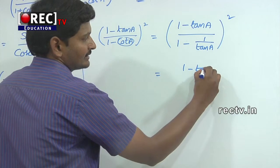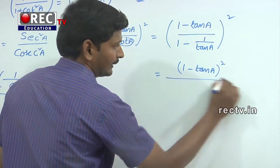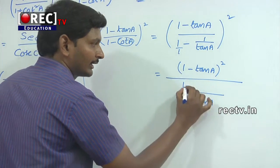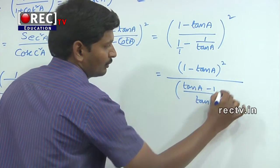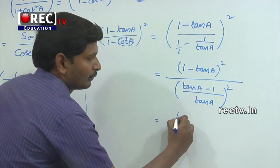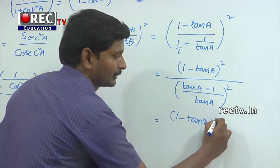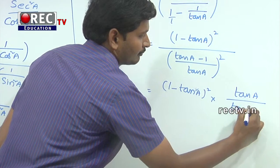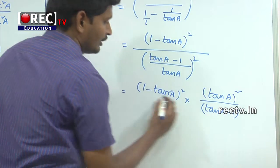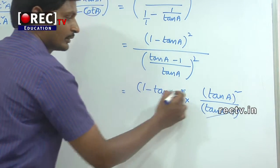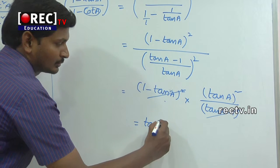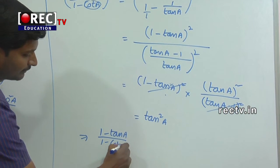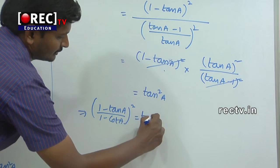That equals (1 - tan a)² divided by, taking LCM here — the LCM is tan a — giving (tan a - 1) / tan a in the denominator. So the full expression becomes (1 - tan a)² multiplied by the reciprocal: tan a / (tan a - 1)². Since (1 - tan a)² equals (tan a - 1)², these cancel, leaving tan a² = tan²a.